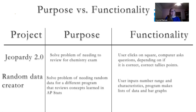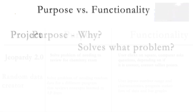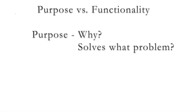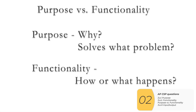To summarize: when you're answering the question about purpose, be sure to answer why and what problem this solves. If you can't put your answer into that form, really think hard about whether that's the answer you want. When you answer the question about functionality, that's usually more straightforward — just answer what happens and how it happens.